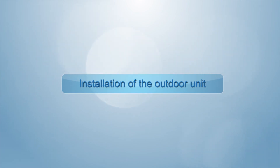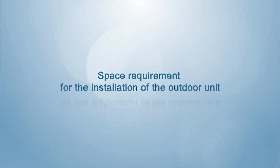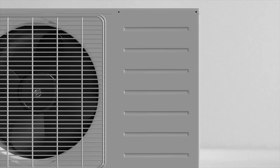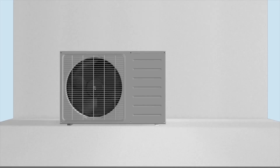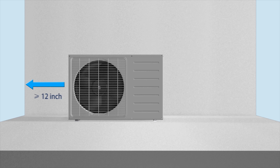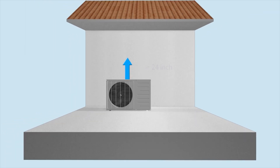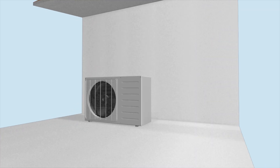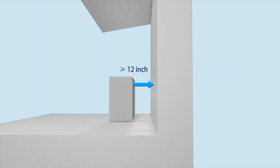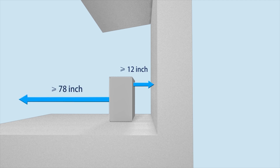Installation of the outdoor unit. Space requirements: no less than 12 inches for left space, no less than 24 inches for right space, no less than 24 inches for upper space, no less than 12 inches for back space, and no less than 78 inches for front space.